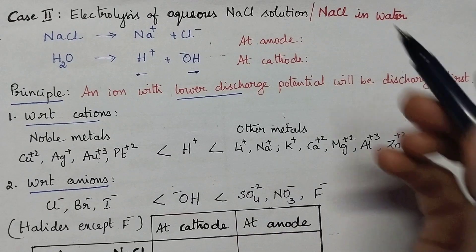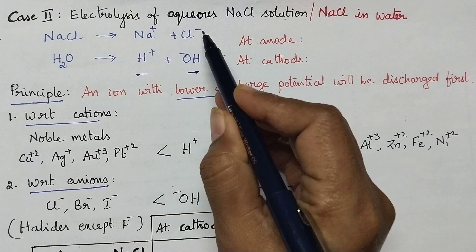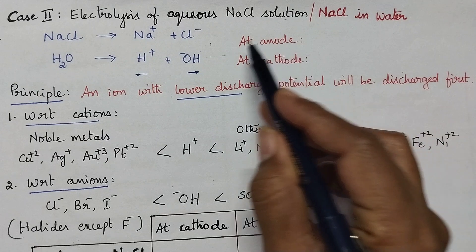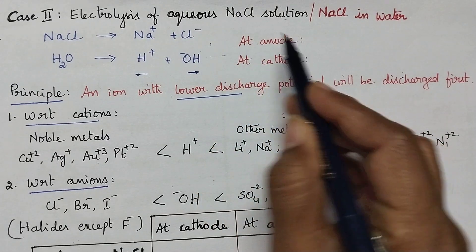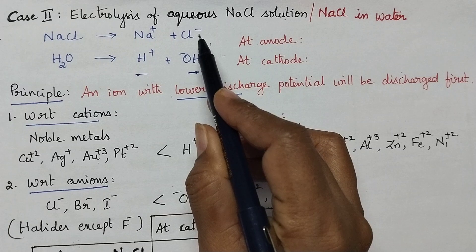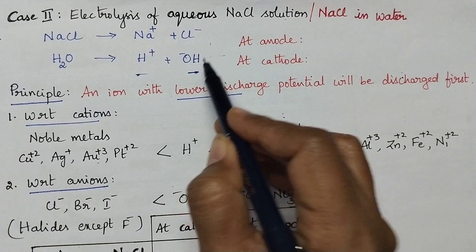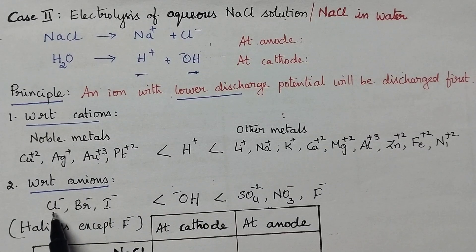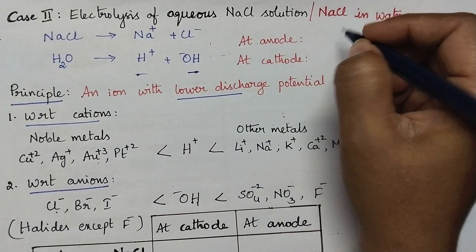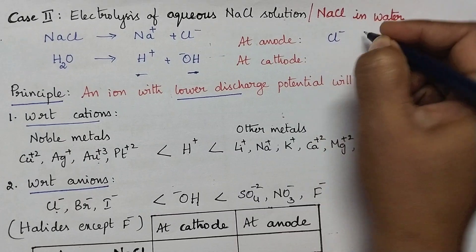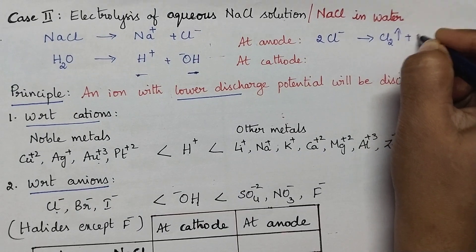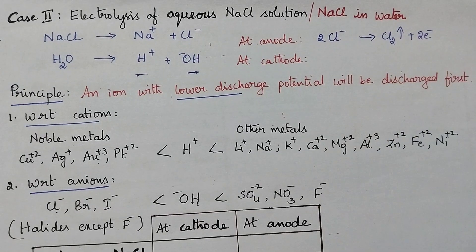Here in this case we are having two cations and two anions. At the anode, anions migrate. The anions are chloride and hydroxide ions. From this principle, chloride is having lower discharge potential and hence it will be discharged first. So at the anode, the chloride will be discharged first and it results in the liberation of chlorine gas.